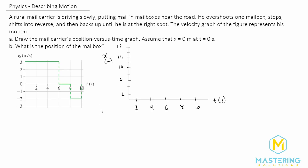Welcome to Mastering Solutions. In this problem, they want us to go from a velocity versus time graph into the position versus time graph. To do that, what we need to do is find the area underneath the curve for the velocity versus time graph, which gives us the displacement or the position.